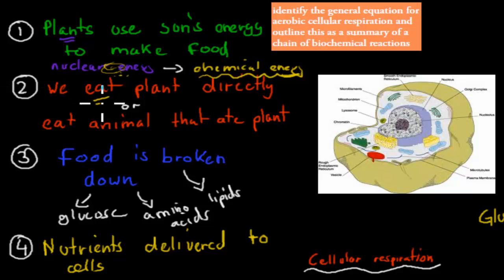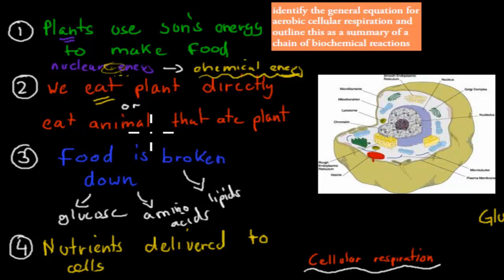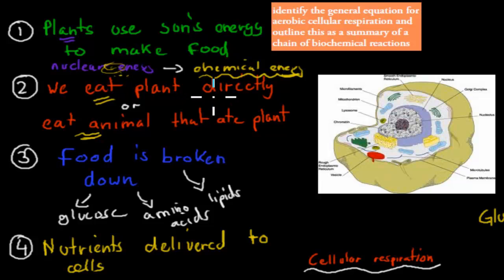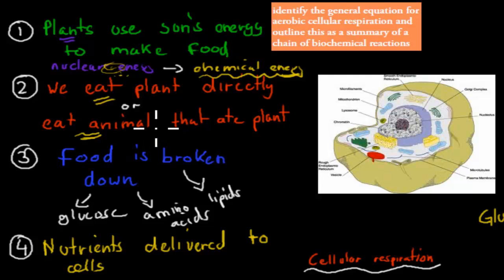The second step is that we have to eat the plant — either directly, or we eat an animal that ate the plant. Either way, the energy always comes from the sun, because the plant gets its energy from the sun, and an animal like a cow had to eat grass to get its energy, which also originally came from the sun.